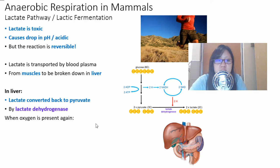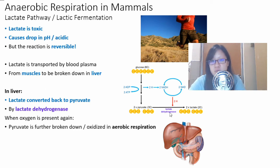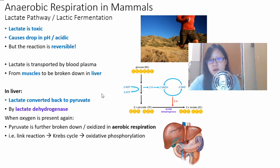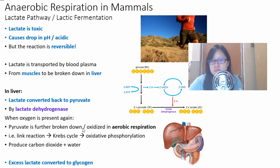In the liver, it will be converted back to pyruvate using the same enzyme, lactate dehydrogenase. And when oxygen is present again, hopefully by then, pyruvate is further broken down and oxidized in aerobic respiration. So lactate converts back to pyruvate. Pyruvate continues breakdown into link reaction, Krebs cycle, oxidative phosphorylation. However, if there is enough energy already and there is excess lactate, then they will be converted to glycogen.